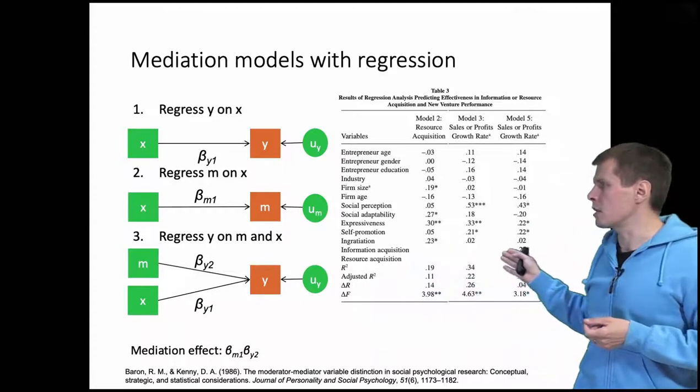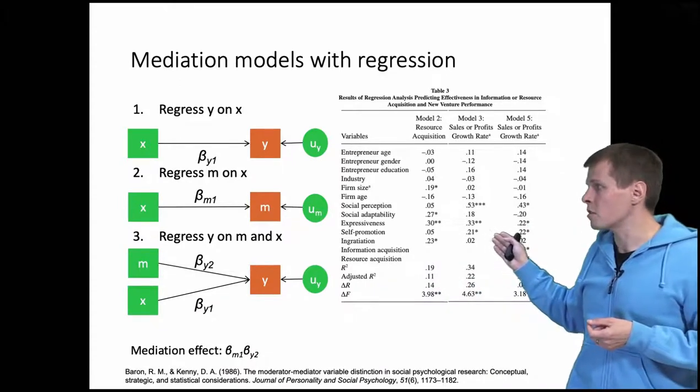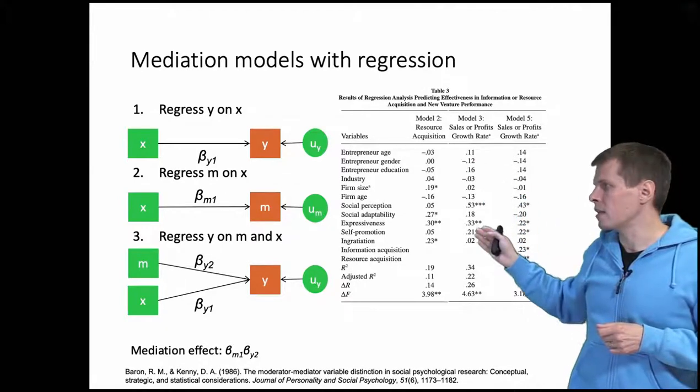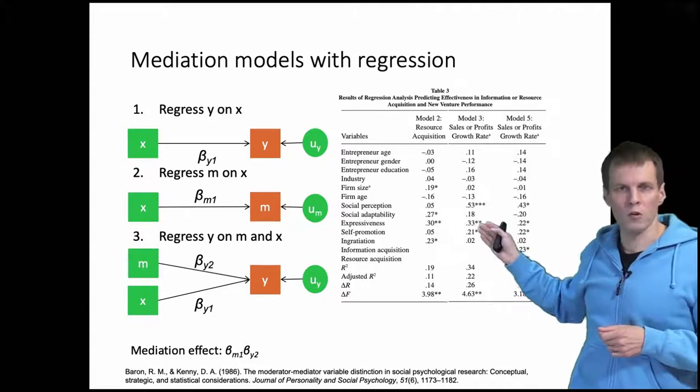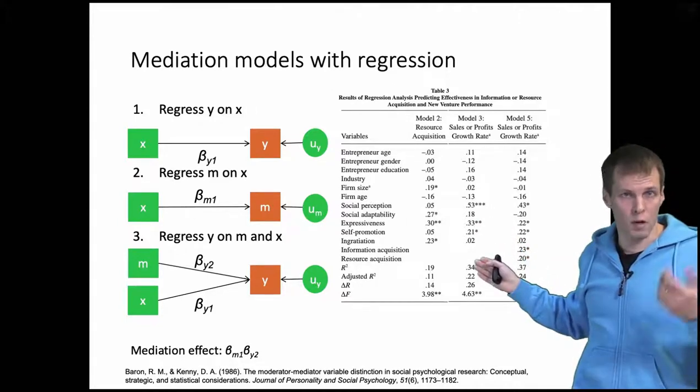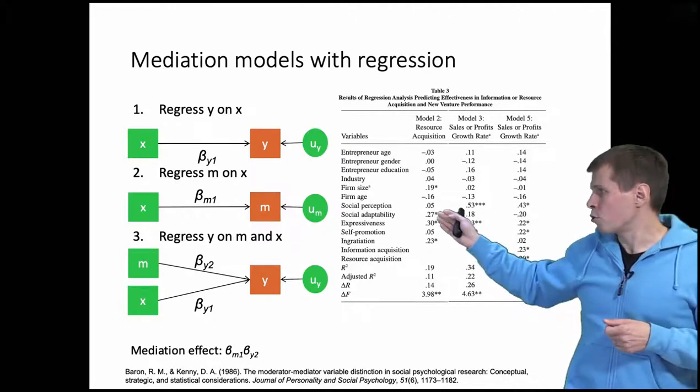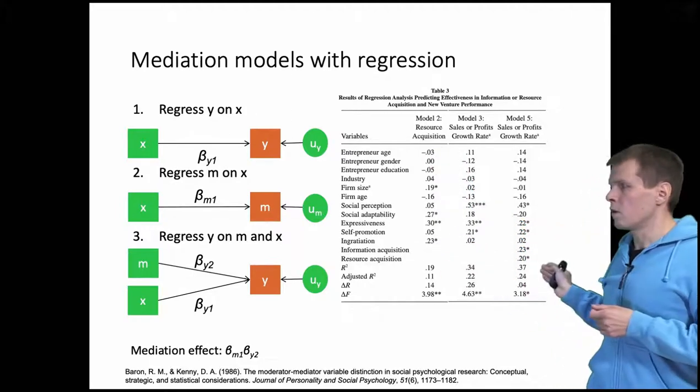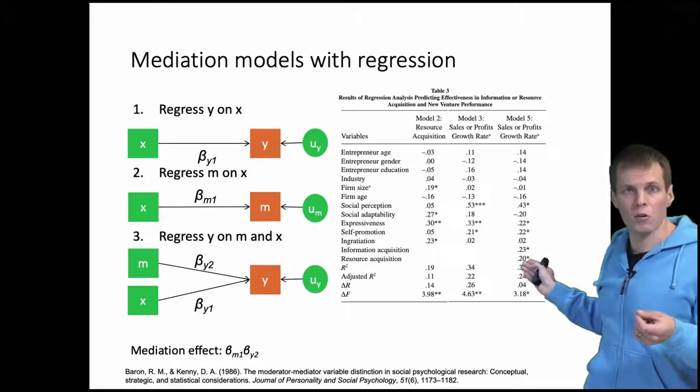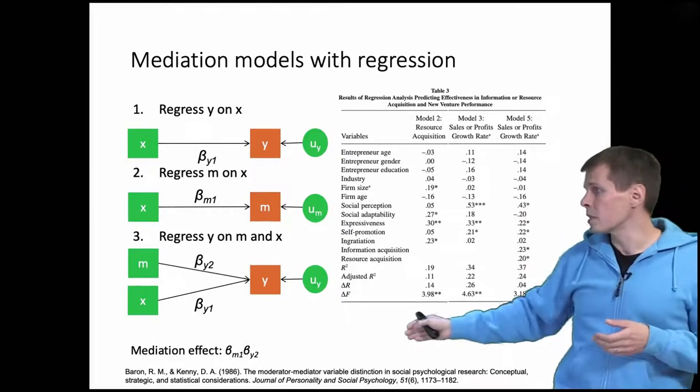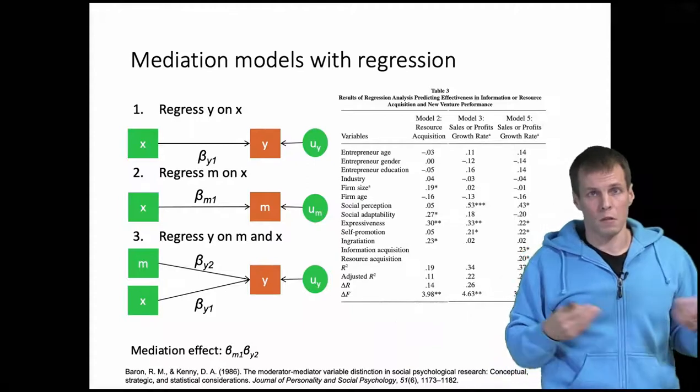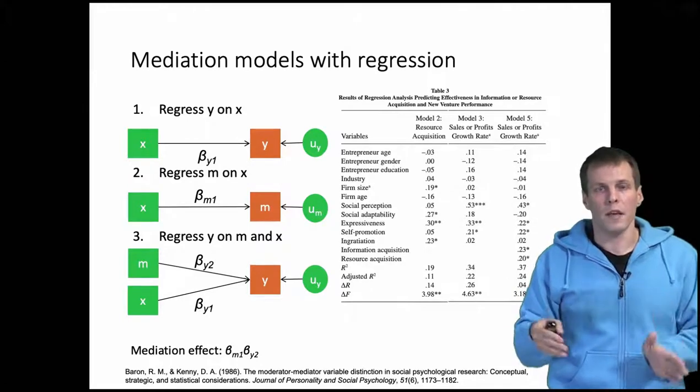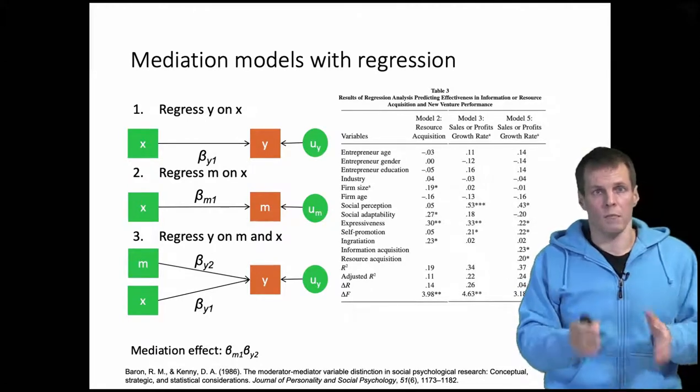We can see these three models, three steps here. So model number three is the first step. It is sales, which is the y variable, regressed on all the interesting variables and controls except for the mediator variables, which are two in this case. Then we have model two, which is step number two—that is resource acquisition, a mediator variable—and then we have model three, where we regress the final dependent variable on the mediators and the original x variables. Then we simply multiply the regression coefficients together to get the mediation effect. So mediation involves testing a series of regression analyses. There are of course other techniques for testing mediation, but this is the simplest one.